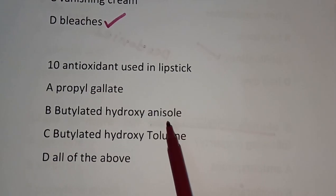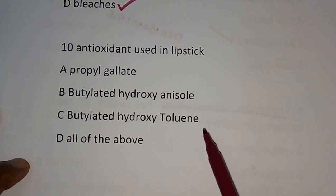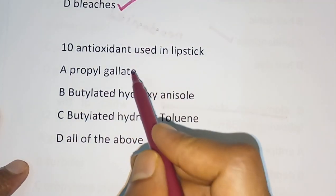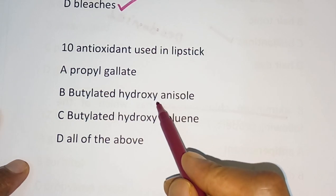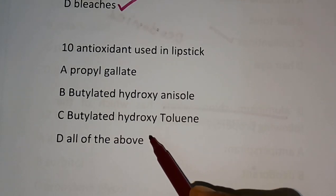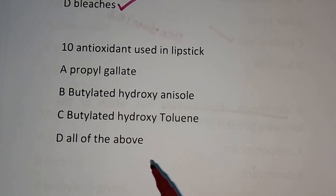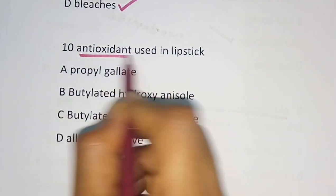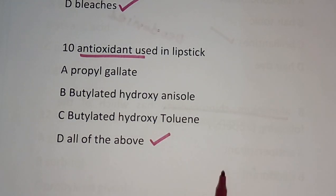Question number 10: Antioxidant used in the lipstick — Propyl gallate, Butylated hydroxy anisole, Butylated hydroxy toluene, or All of the above? The correct answer is all of the above. All three are antioxidants used in lipstick.